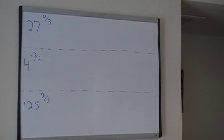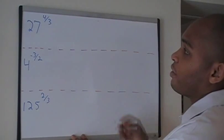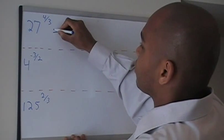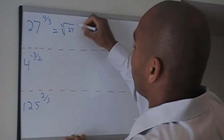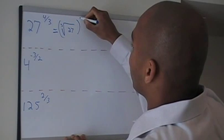I'd like to evaluate each of the following expressions by changing to radical form first. So 27 raised to the 4 thirds becomes the cube root of 27 and that result I'm going to raise to the 4th.